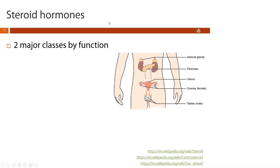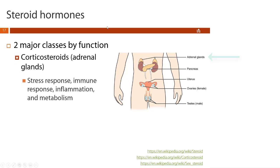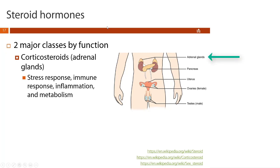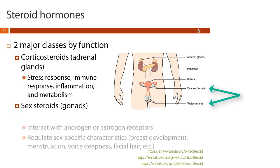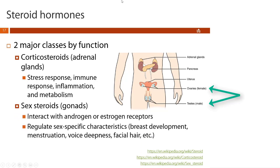We can subdivide steroid hormones into two major classes. Corticosteroids are produced in the adrenal glands and regulate things like stress response, immune response, inflammation, and metabolism. Our other main category are sex steroids, which are produced in the gonads and interact with androgen and estrogen receptors to regulate sex-specific characteristics such as breast development, voice deepness, menstruation, or facial hair.